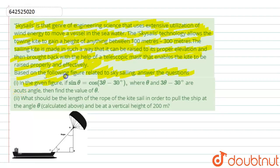The first question is: in the given figure, if sin θ is equal to cos(3θ - 30°), where θ and 3θ - 30° are acute angles, then find the value of θ. Second question: what should be the length of rope of the kite sail in order to pull the ship at an angle θ calculated above and be at a vertical height of 200 meters?